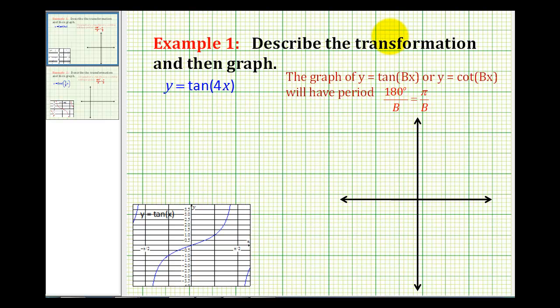So this coefficient of x, often referenced as b, is equal to four in this case. And this is going to affect the period of this tangent function.